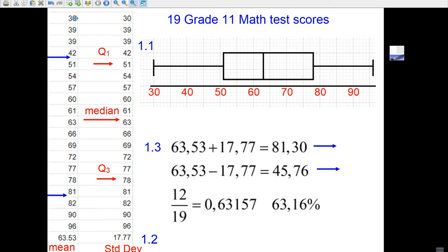I cheated and put it in Excel, and here they are in order with 30 being the minimum, 96 being the maximum. There's 19 numbers, so if there's 19 numbers, that means that the 10th number must be the median. This number right there, 63.